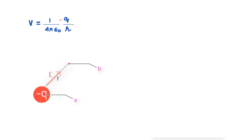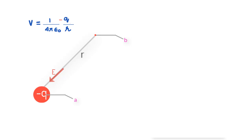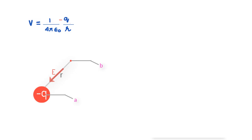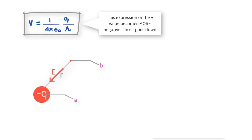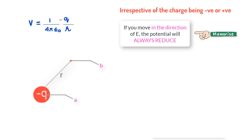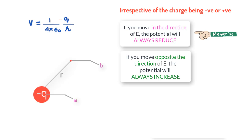Very obviously, if you are moving opposite to E, the V value keeps increasing because R keeps reducing, making the expression larger. Now if we have a negative charge, the direction of E will be reversed and V would be negative at any distance R. If you move away from the charge, V becomes larger because it becomes less negative. As you move in the direction of the field toward the charge, V becomes smaller because it becomes more negative.